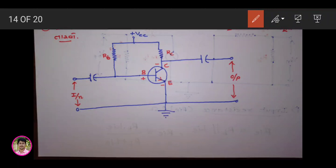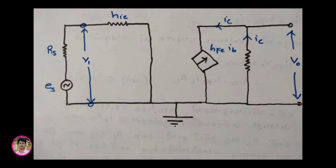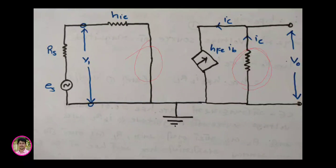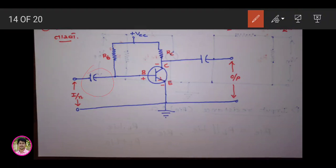In the circuit we have drawn, we have not added any impedance or admittance. Before adding all these things, we had seen one theory earlier — looking at the circuit, we know what elements to remove from it. So the reverse voltage ratio we had — that was removed, as the information was given to you earlier.